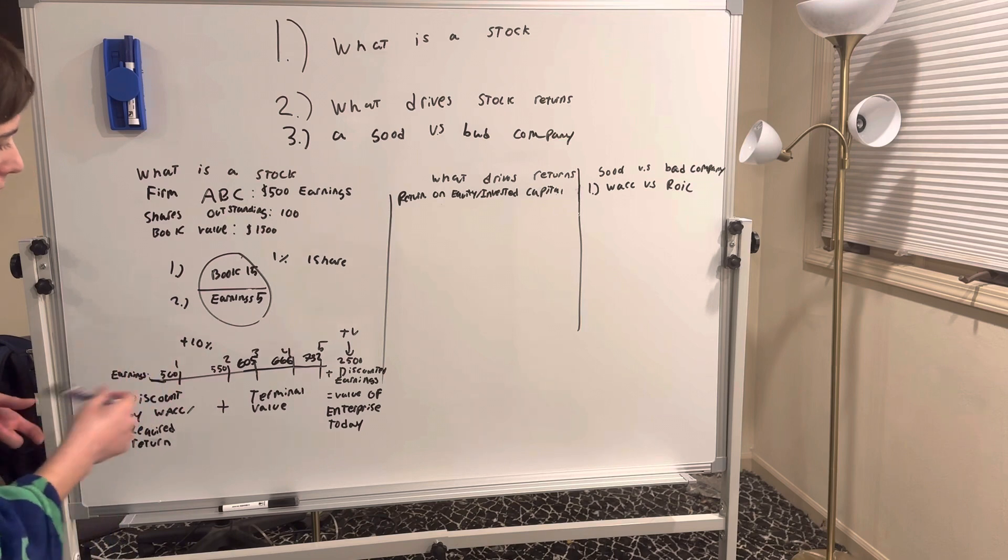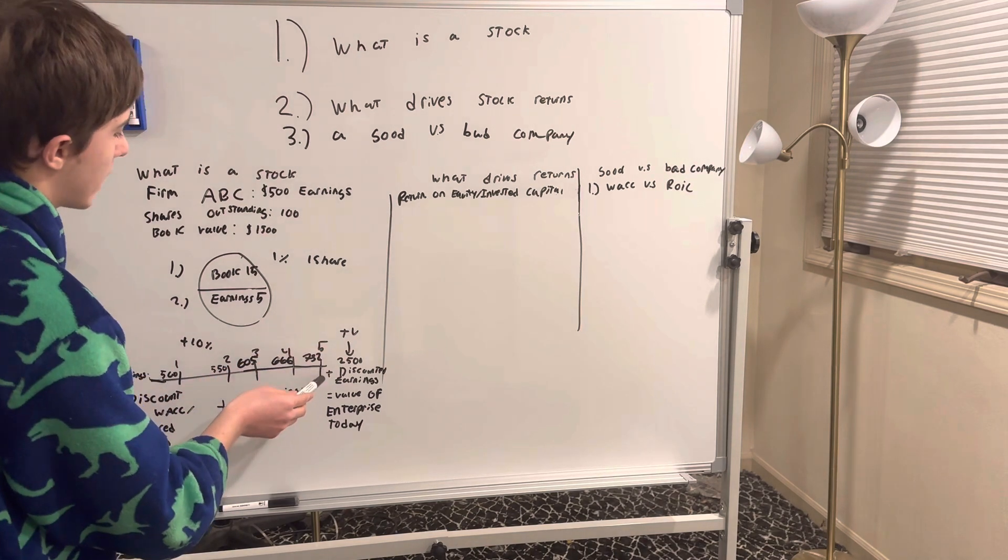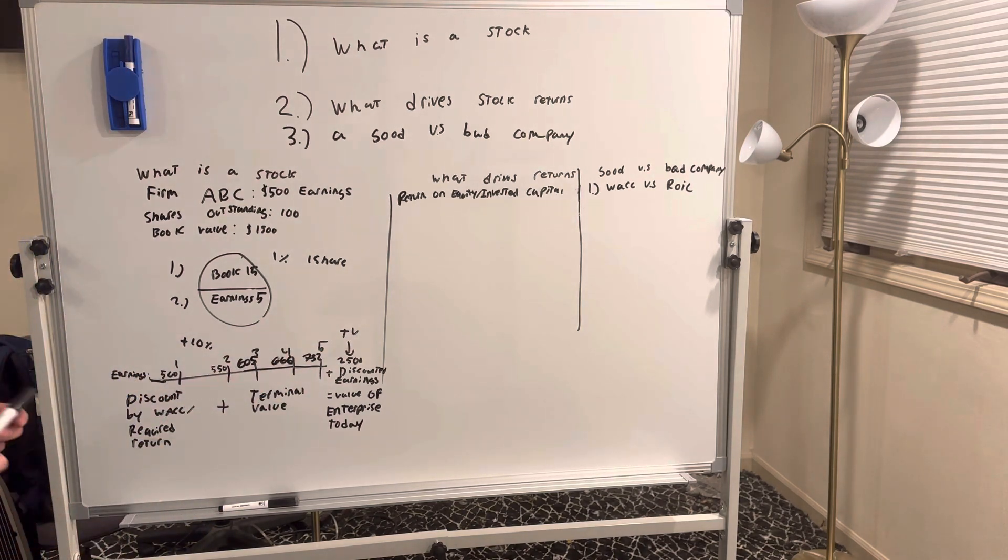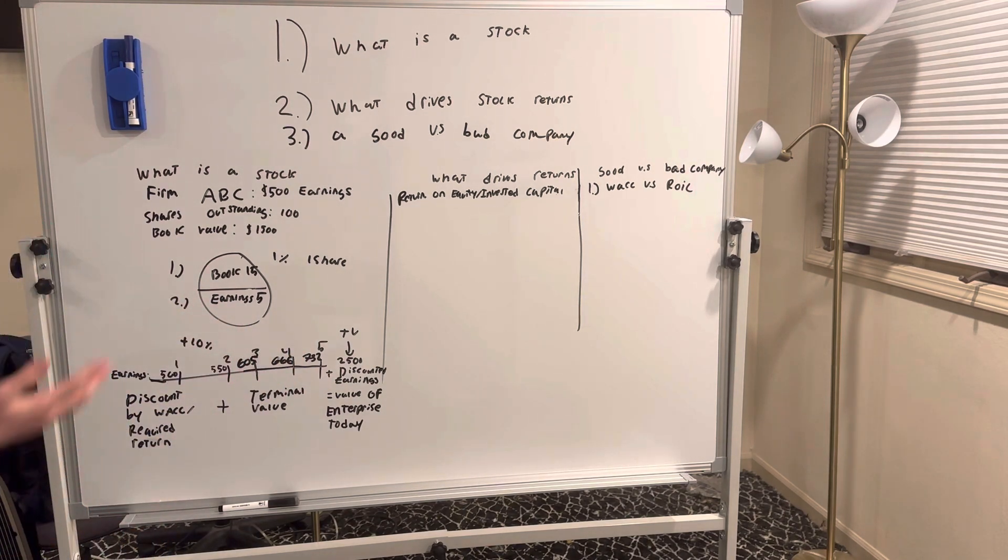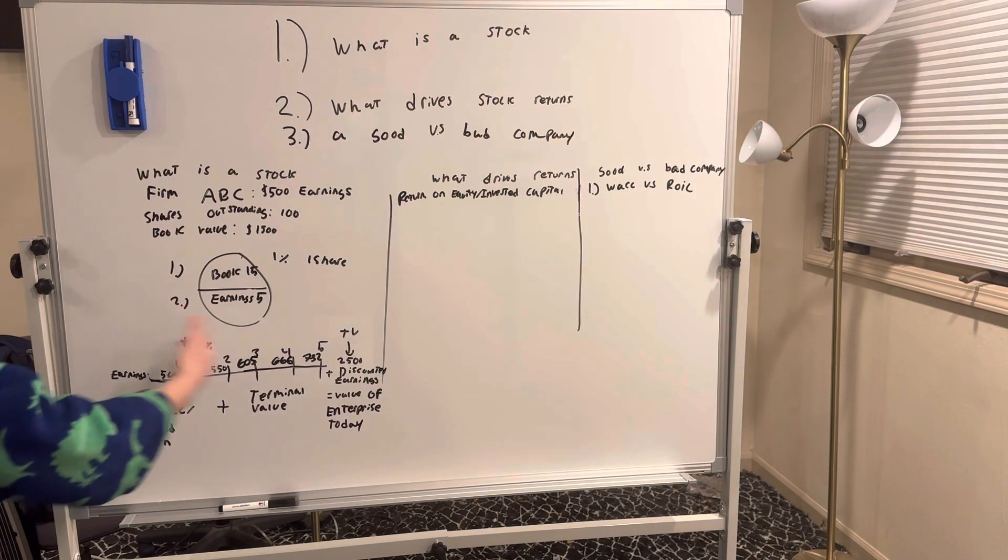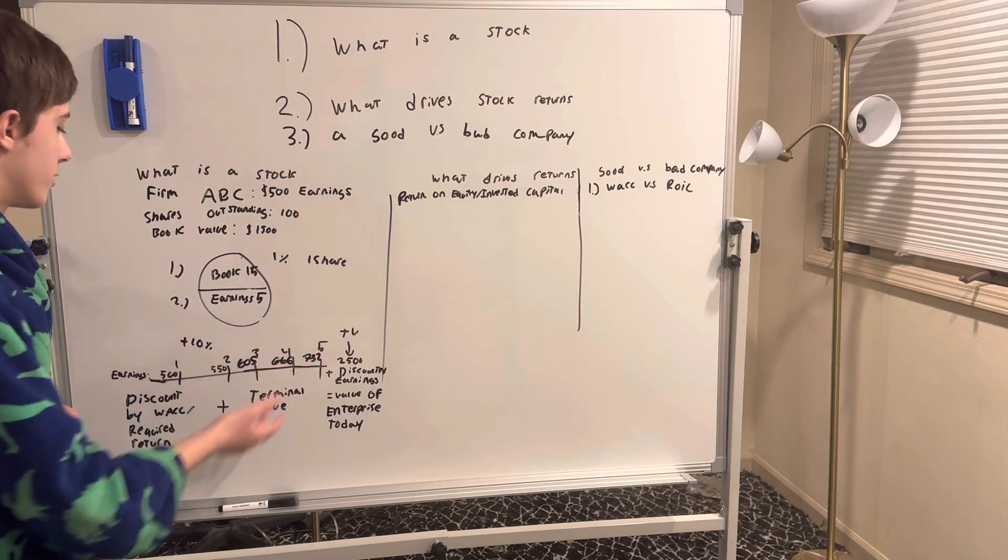And then we have to apply terminal value because we can't forecast forever. If we can only reasonably forecast for the next five years, we'll just forecast out to there and add in the terminal value. It's essentially what the firm is worth past the forecasted period, after the five years.